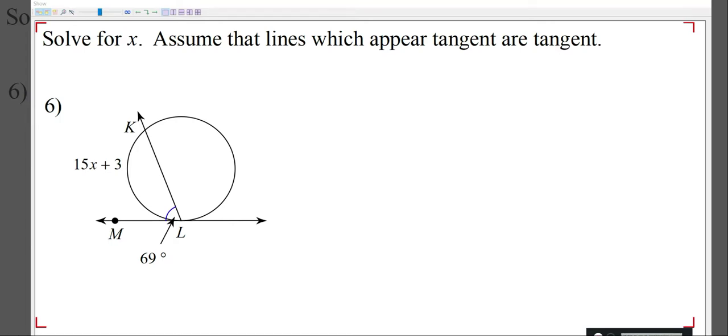The first thing I want to look for when solving for x is where is my vertex? My vertex is on the circle, and that tells me I'm either going to use arc divided by 2 equals angle, or the other way to write this would be 2 times angle equals the arc.